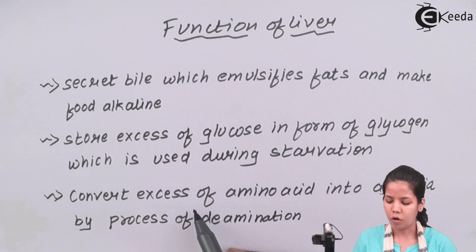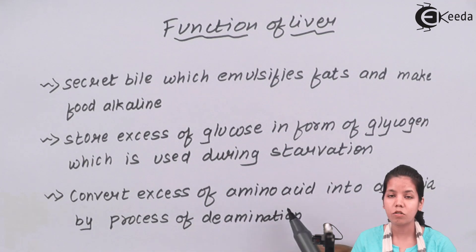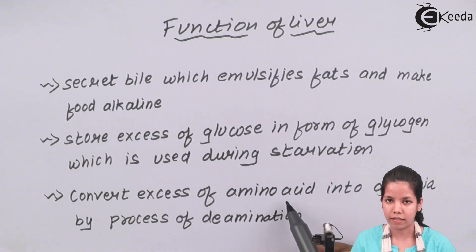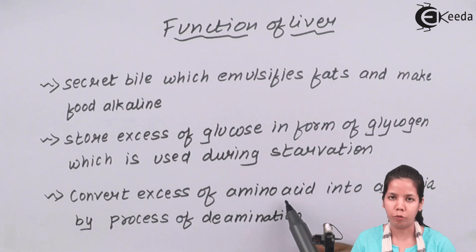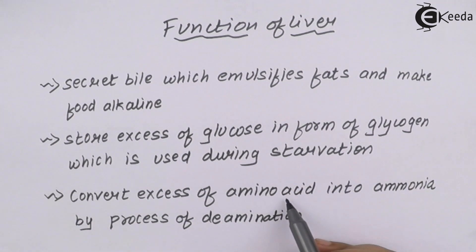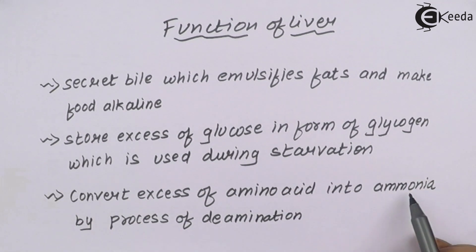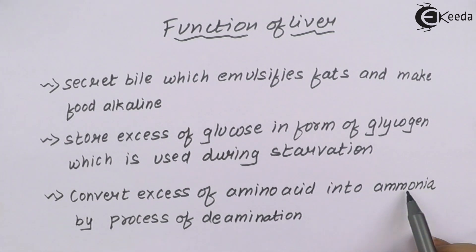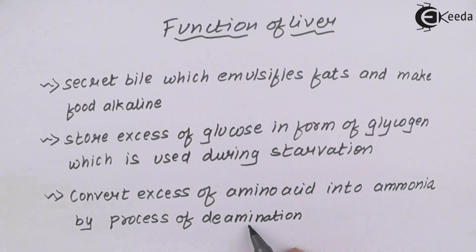The liver also helps to convert excess amino acids. Amino acids join together to form proteins, and the liver converts them into ammonia (NH3), a waste product of protein metabolism, by the process of deamination.